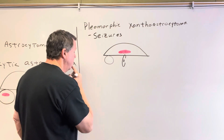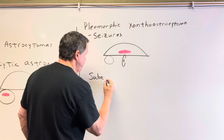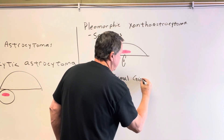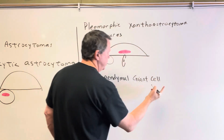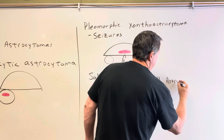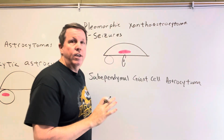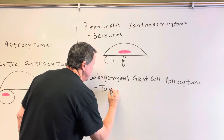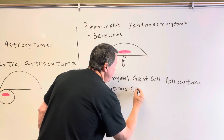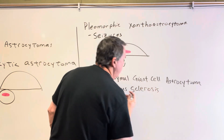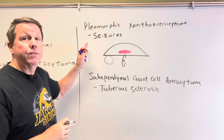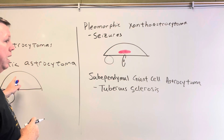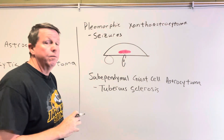The third type is called a subependymal giant cell astrocytoma. These are often associated with a condition called tuberous sclerosis, which is a rare genetic condition in which the body grows benign tumors. All three grade one types — the pilocytic astrocytoma, the pleomorphic xanthoastrocytoma, and the subependymal giant cell astrocytoma — are benign.